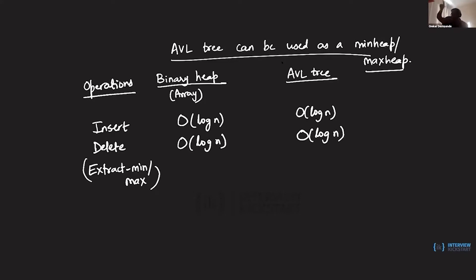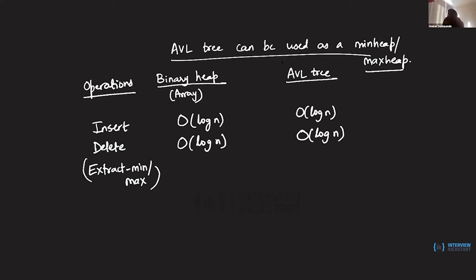In an AVL tree, you would go down to the minimum or maximum element, which will have at most one child. You find it by starting from the root and following the left or right pointers depending on whether it's min or max, then delete that node. The readjustments take O(log n) time, so extract min/max takes O(log n) time. But in heaps you can look at the min or max value in constant time since it's right there at the start of the array. In an AVL tree you need O(log n) time just to peek at the min or max value.